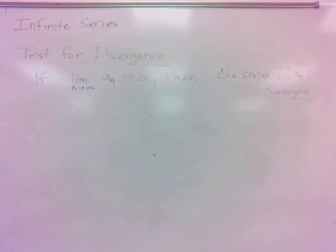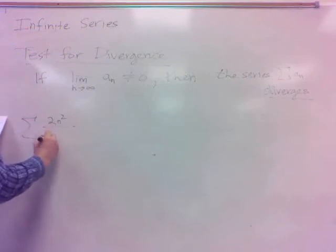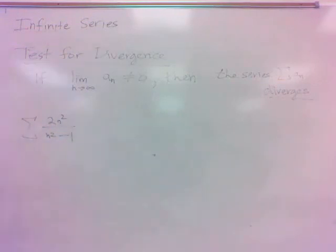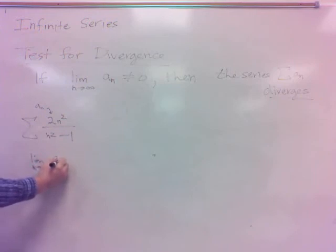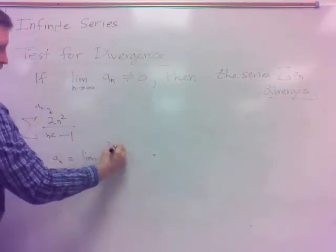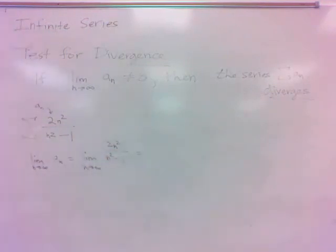For example, if I have the series 2n squared over n squared minus 1, here's a sub n. What does the limit of a sub n as n goes to infinity come out to be? What is that limit? It'd be 2, wouldn't it?